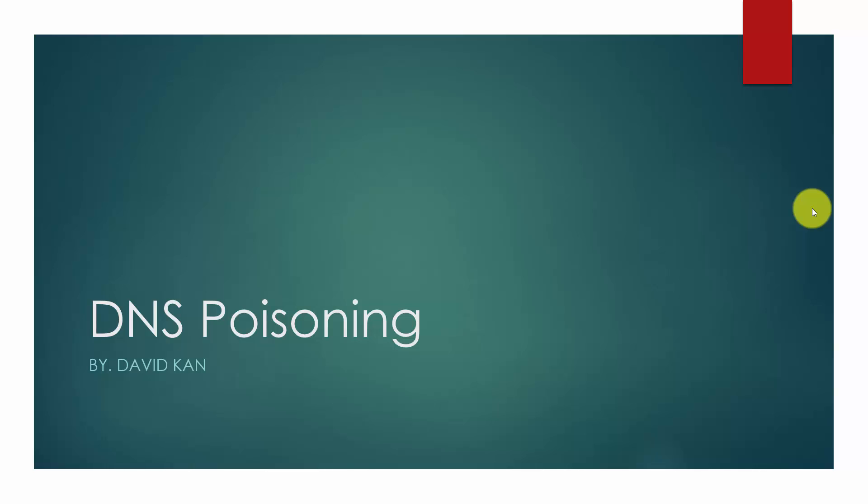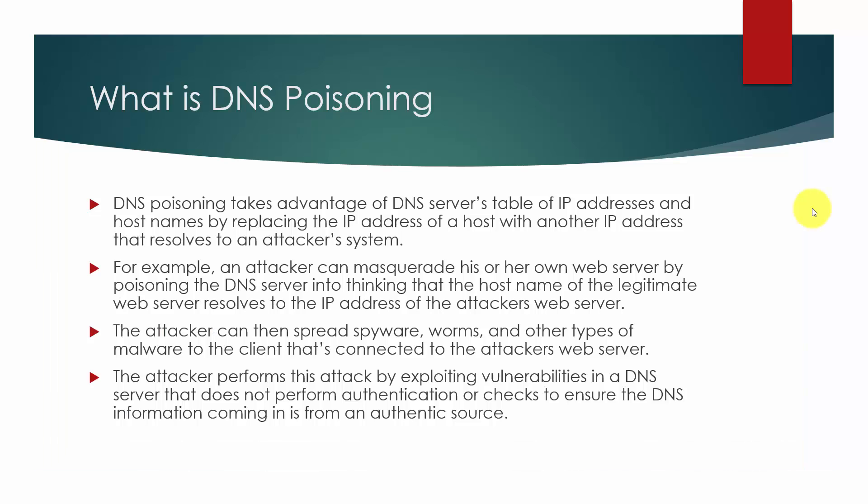For this lesson we're going to cover DNS poisoning. DNS poisoning takes advantage of DNS servers' tables of IP addresses and host names by replacing the IP address of a host with another IP address that resolves to an attacker system. For example, an attacker can masquerade his or her own web server by poisoning the DNS server into thinking that the host name of the legitimate web server resolves to the IP address of the attacker's web server.